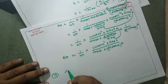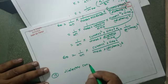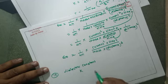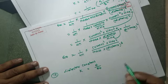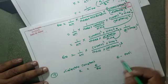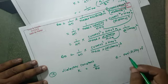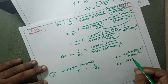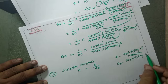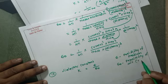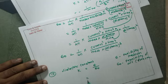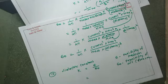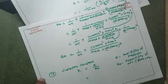The dielectric constant K is the ratio of permittivity of a medium to the permittivity of free space. It has no dimensions, but its dimensional formula is the same as the ratio of the two permittivities, which cancel out.